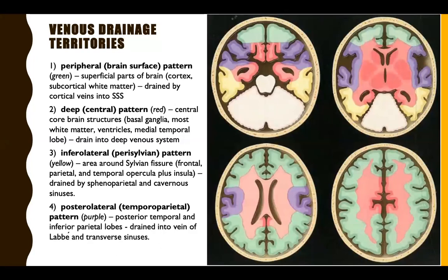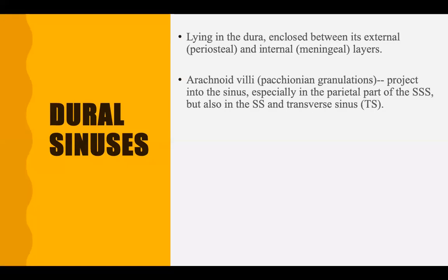This is an overview of venous drainage territories. The peripheral brain structures (green) drain via cortical veins into the superior sagittal sinus. The central core brain structures, white matter, basal ganglia, ventricles, and medial temporal lobes drain into the deep venous system. The infralateral pattern — frontal, parietal, temporal opercula including insula — drains mainly into the sphenoparietal and cavernous sinuses. The temporoparietal pattern drains mainly via the vein of Labbé into the transverse sinuses.